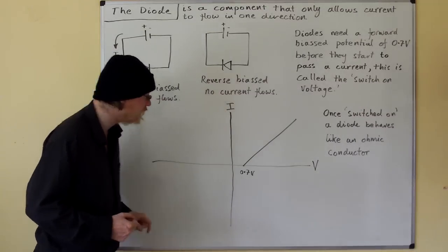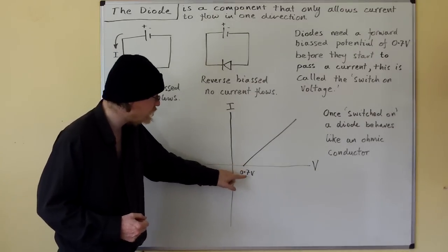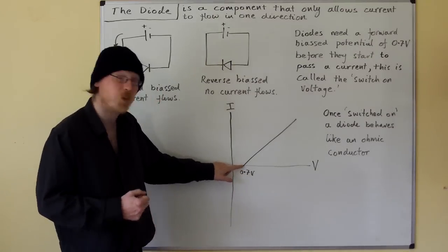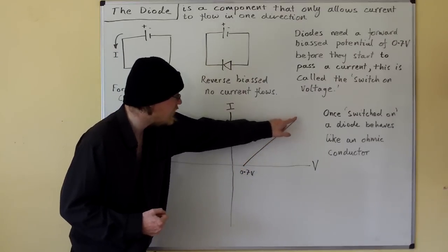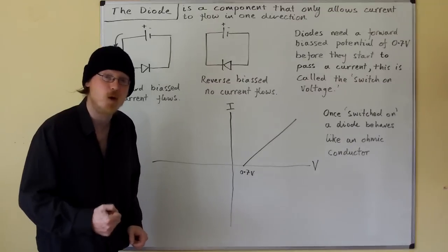So here is our IV curve. As we increase the voltage in the positive direction, we reach 0.7 volts, we switch on our diode, and it starts to pass a current. Once switched on, a diode behaves like an ohmic conductor.